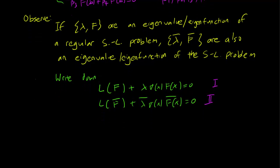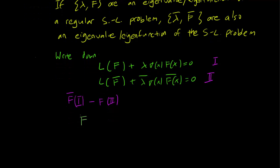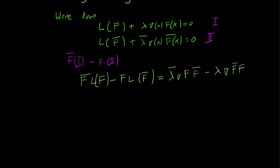And we can perform a similar calculation like we did in the previous video. We label the first equation 1 and the second equation 2. And we see what happens when we multiply f bar times 1 minus f times 2. We get the equation f bar L(F) minus f L(F bar) equals lambda bar sigma(x) f times f bar minus lambda sigma(x) f bar times f, and we integrate both sides.